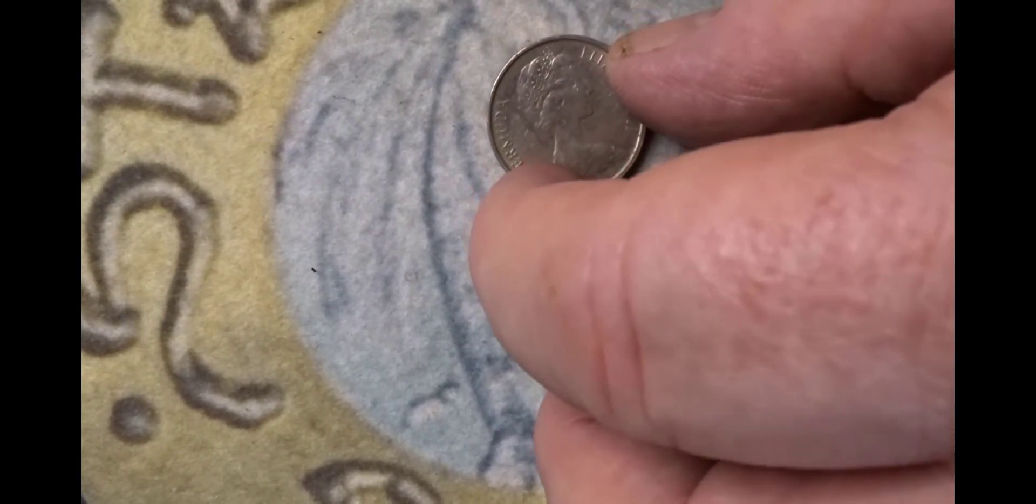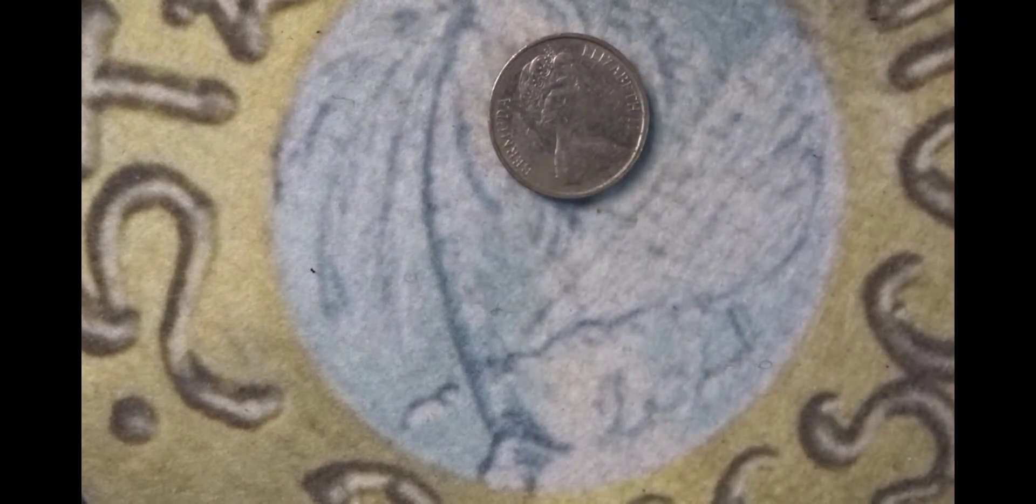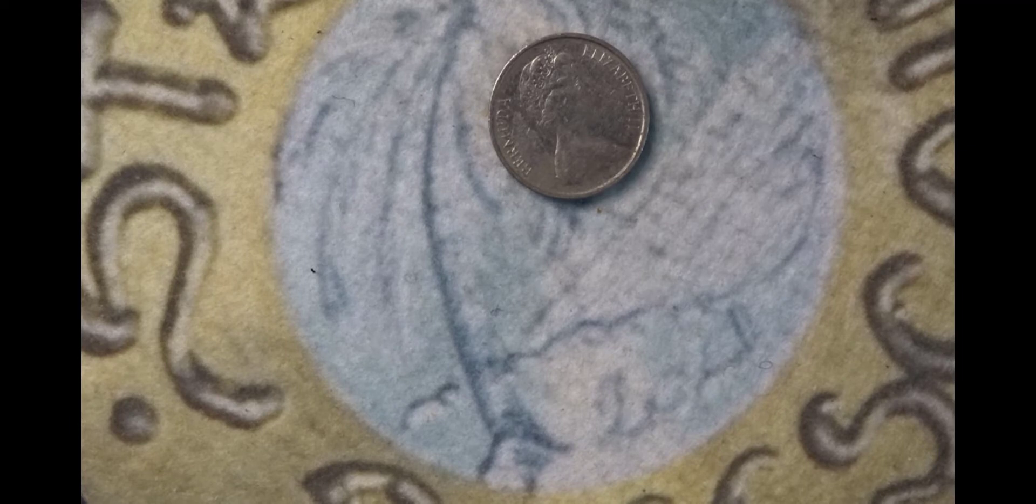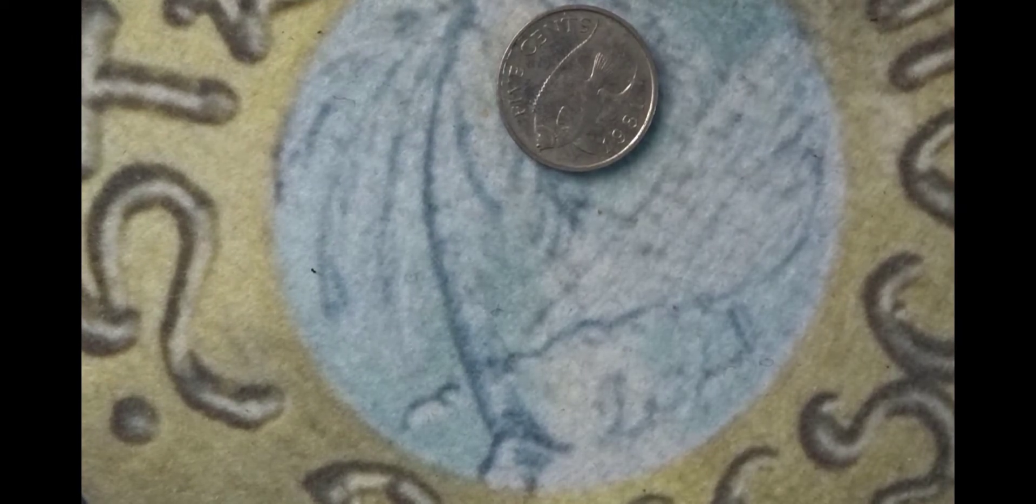This coin here with the queen's head on it is from Bermuda, it's from 1981. It has a value of five cents. On the reverse you have the value of five cents going across the top.